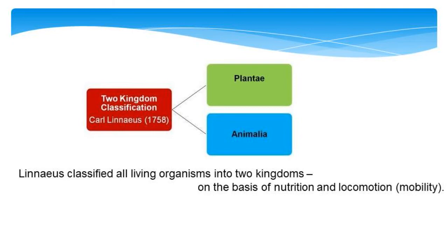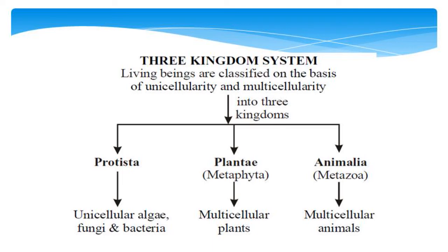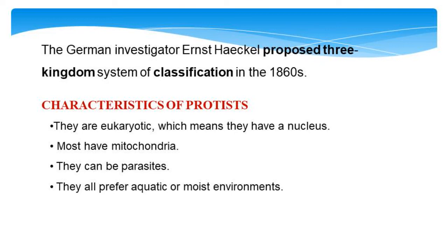The two-kingdom classification was given by Linnaeus in the year 1758. He classified organisms on the basis of nutrition and locomotion into Plantae and Animalia. The three-kingdom classification system was proposed by Ernest Haeckel in 1860. Depending on cellularity — whether unicellular or multicellular — it includes Protista, Plantae, and Animalia. Protista are unicellular; examples include algae, fungi, and bacteria. Plantae and Animalia are multicellular.